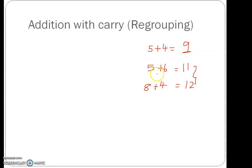But when we added 5 and 6, we got 11 which is a 2 digit number. Similarly, 8 plus 4, we got 12 which again is a 2 digit number. So when you add 2 numbers, the result or the sum can either be a single digit number or it can be 2 digit numbers.